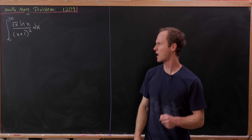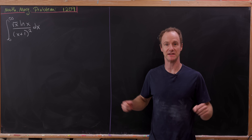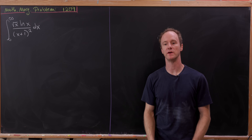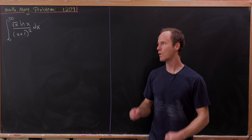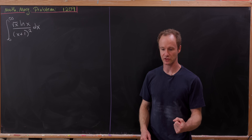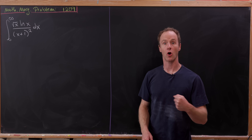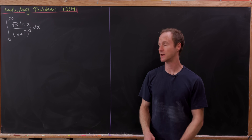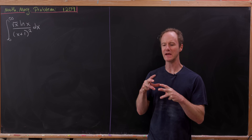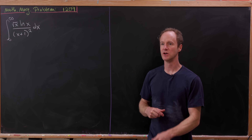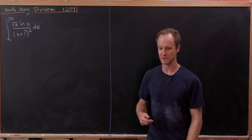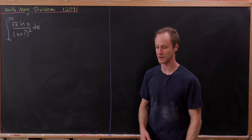Today we've got a really nice problem that came from the math magazine. The problem number is actually my birth year, 1209. What makes this interesting is it's a combination of a rational function, a radical function, and a logarithmic function. Anytime you have this type of mixing of functions, you know the integral is going to be difficult and perhaps require some kind of nice trick, and that's what we'll see here.